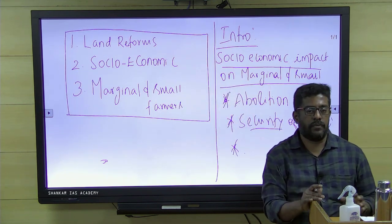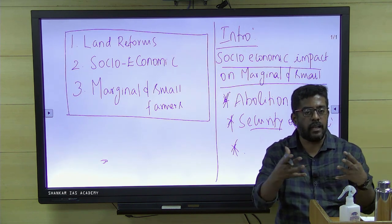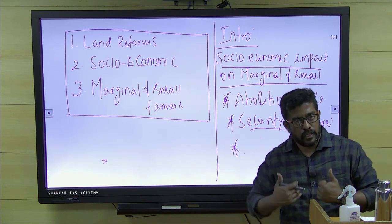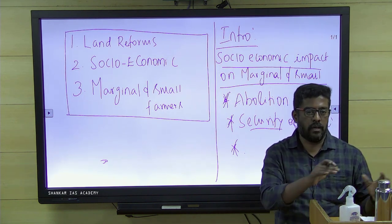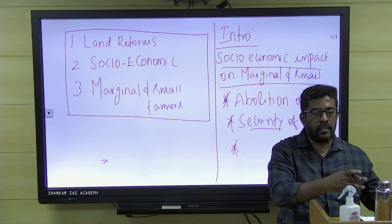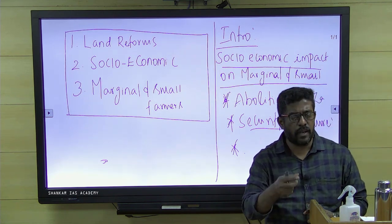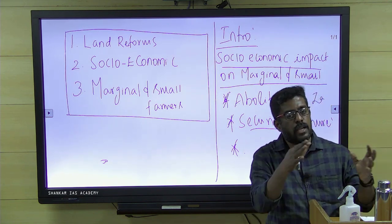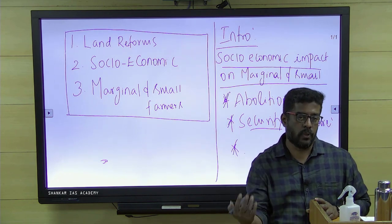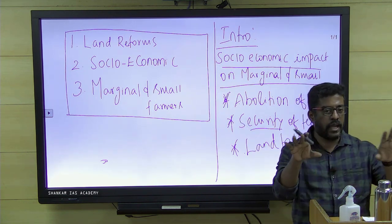The next point: land reform had the feature called 'land to the tiller.' Before that, we observed absentee landlordism — the owners were not cultivating while the cultivators were not the owners. Through land reforms, we ensured land must be under the hands of the tiller. When this was implemented, lands were given to the farmers. As a result, what were mere peasants were converted into owners in agriculture, and this empowered them socially and economically.